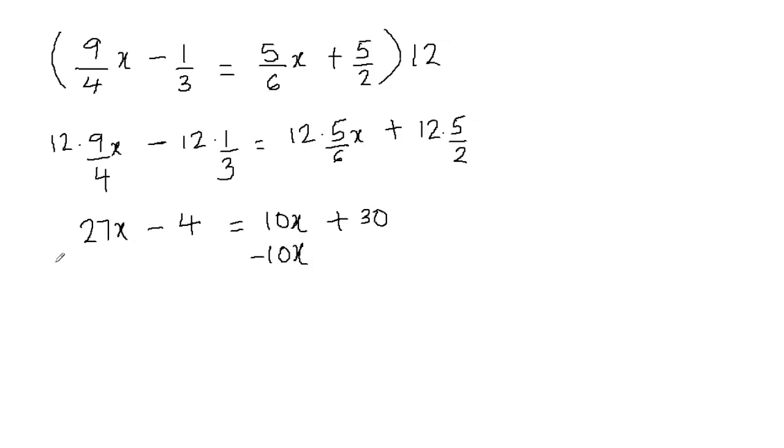So subtracting 10x on both sides of the equation. Now this is 27x minus 10x is going to give me 17x. And then I'm going to bring down minus 4 is equal to 10x minus 10x is going to be 0 and 0 plus 30 is going to give me 30.